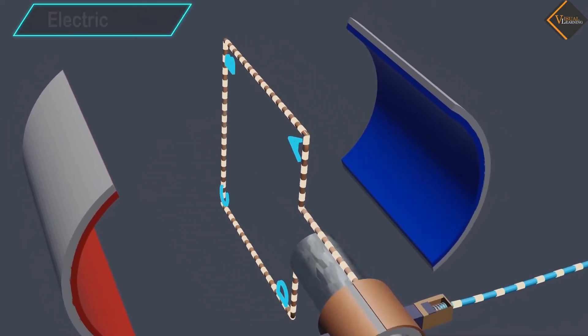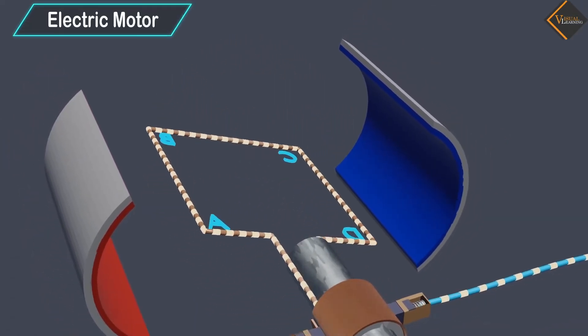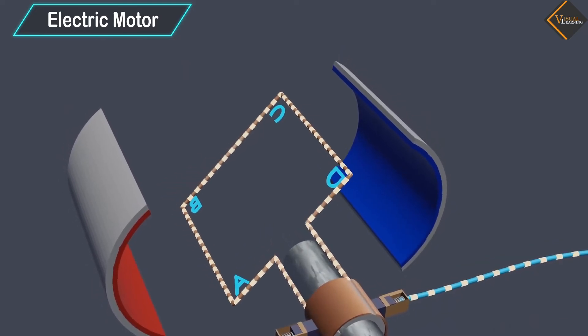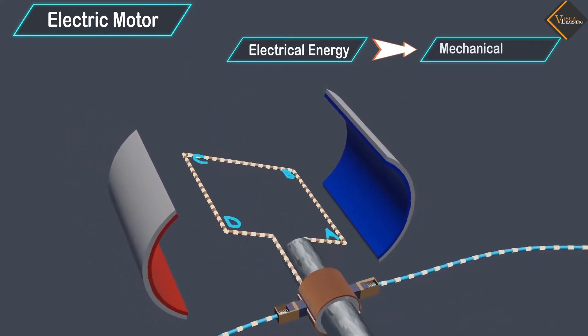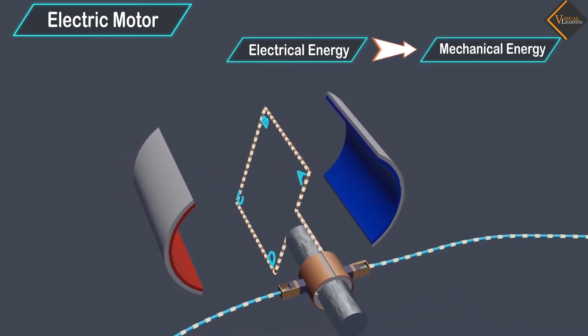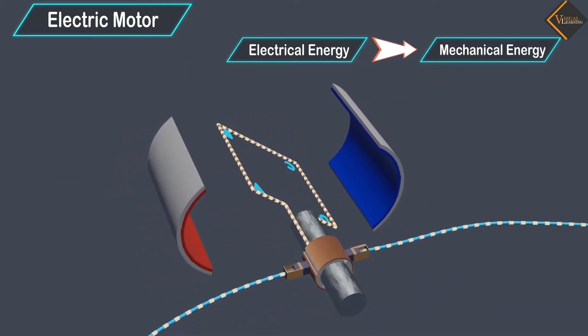In this video, we will understand electric motor. An electric motor is a rotating device that converts electrical energy to mechanical energy. Let's understand how an electric motor works.